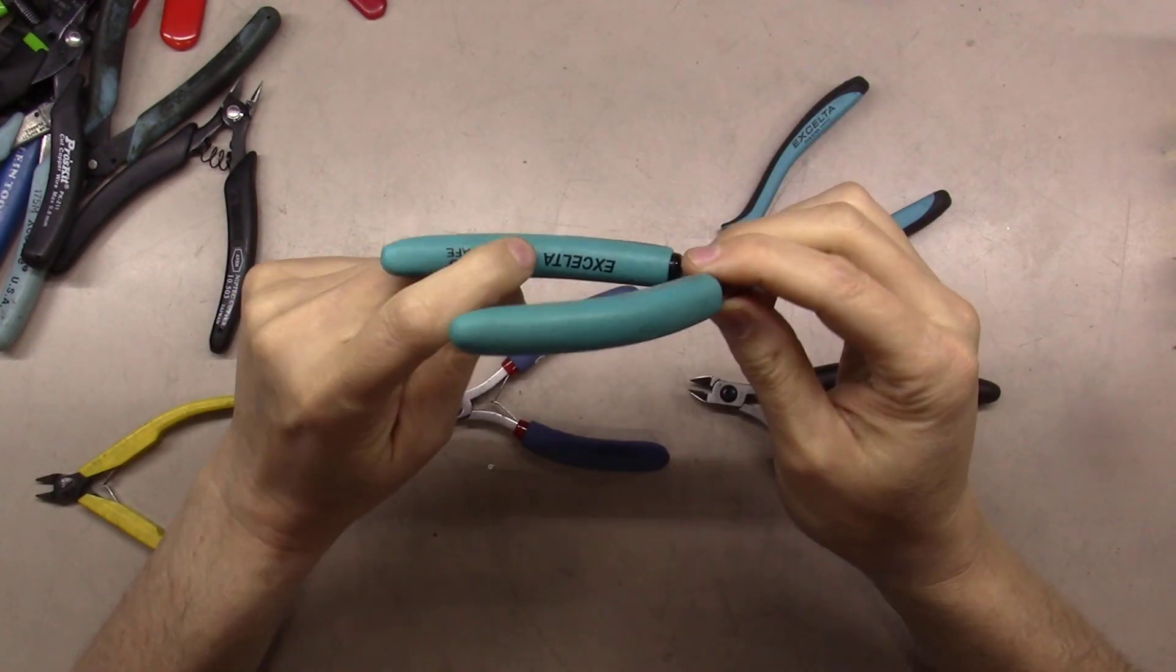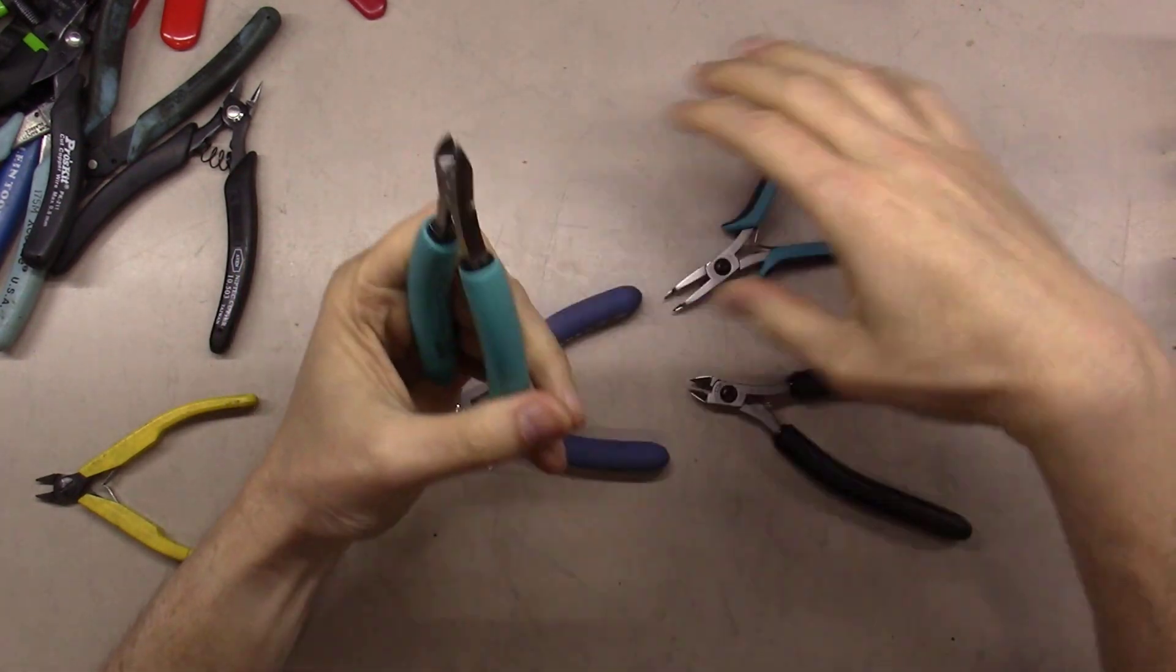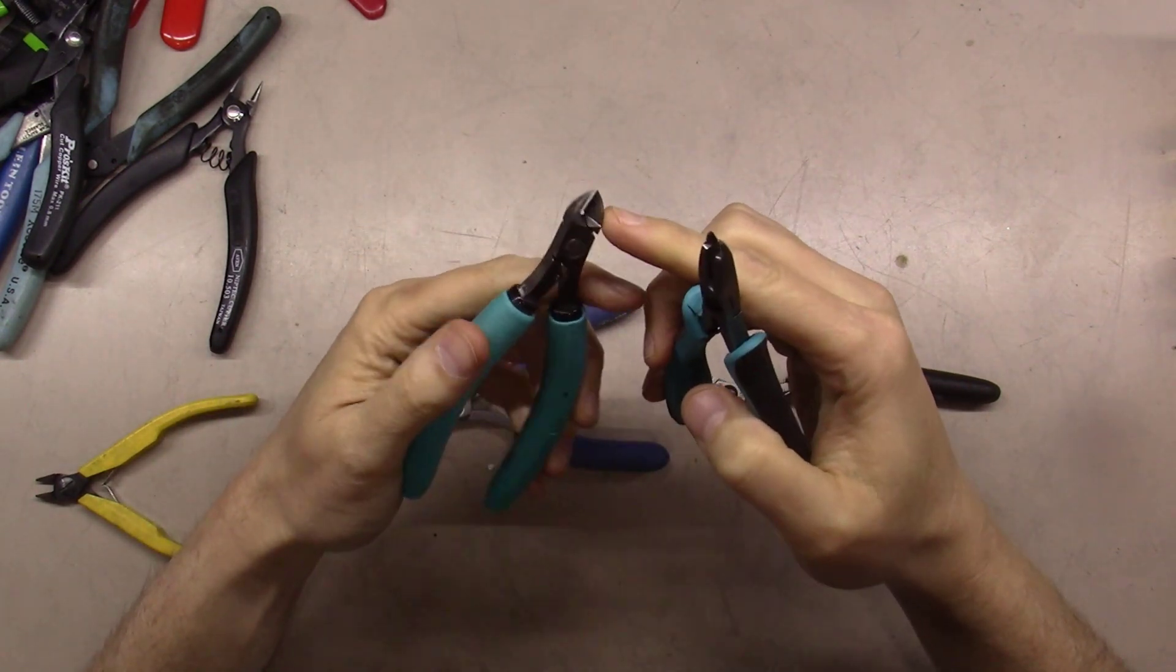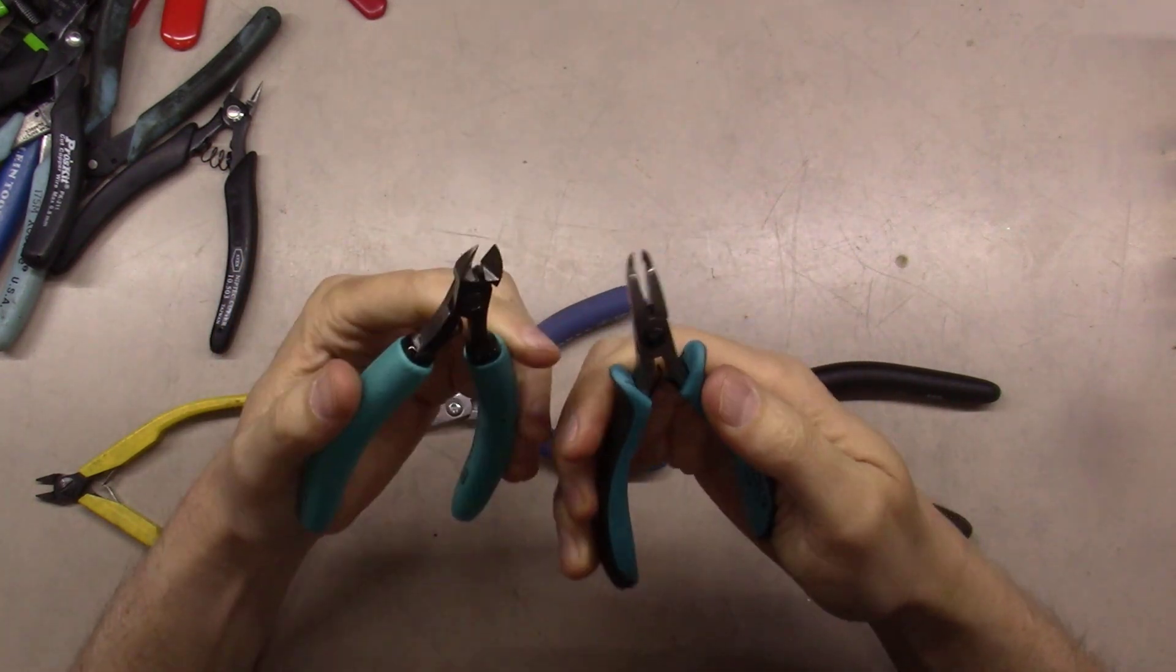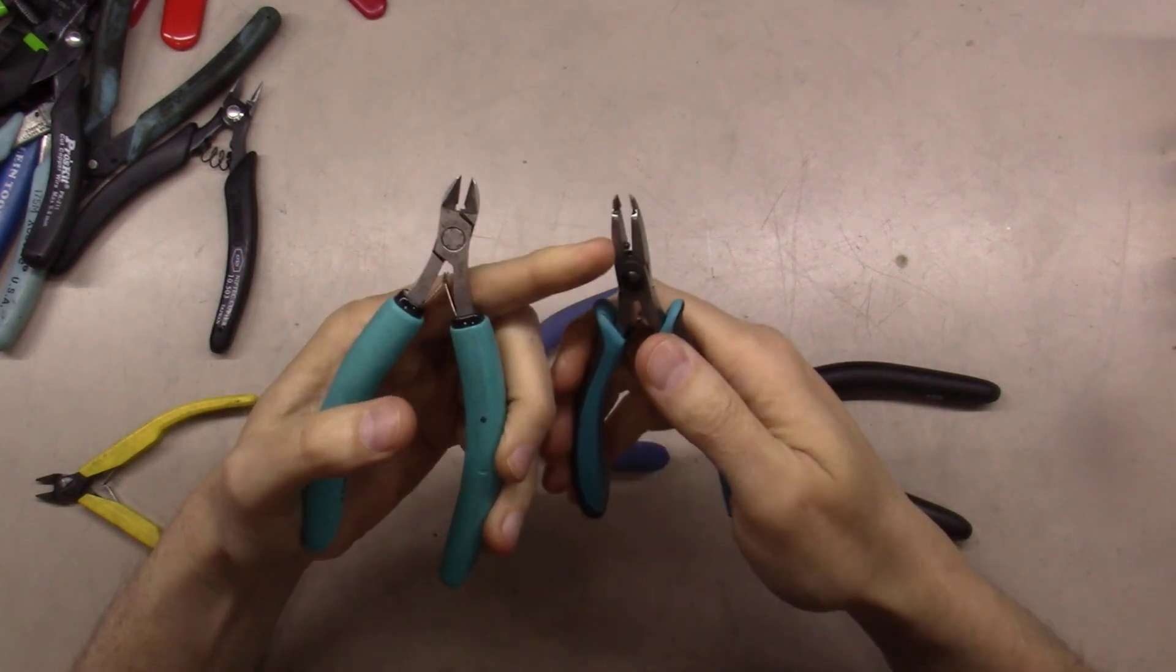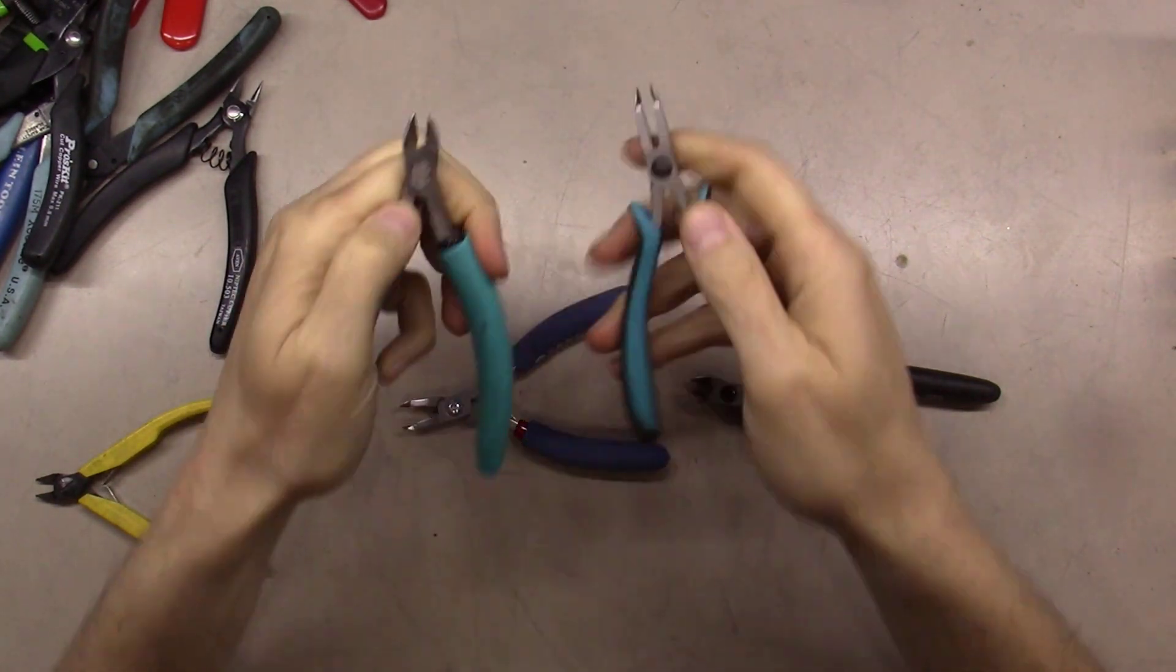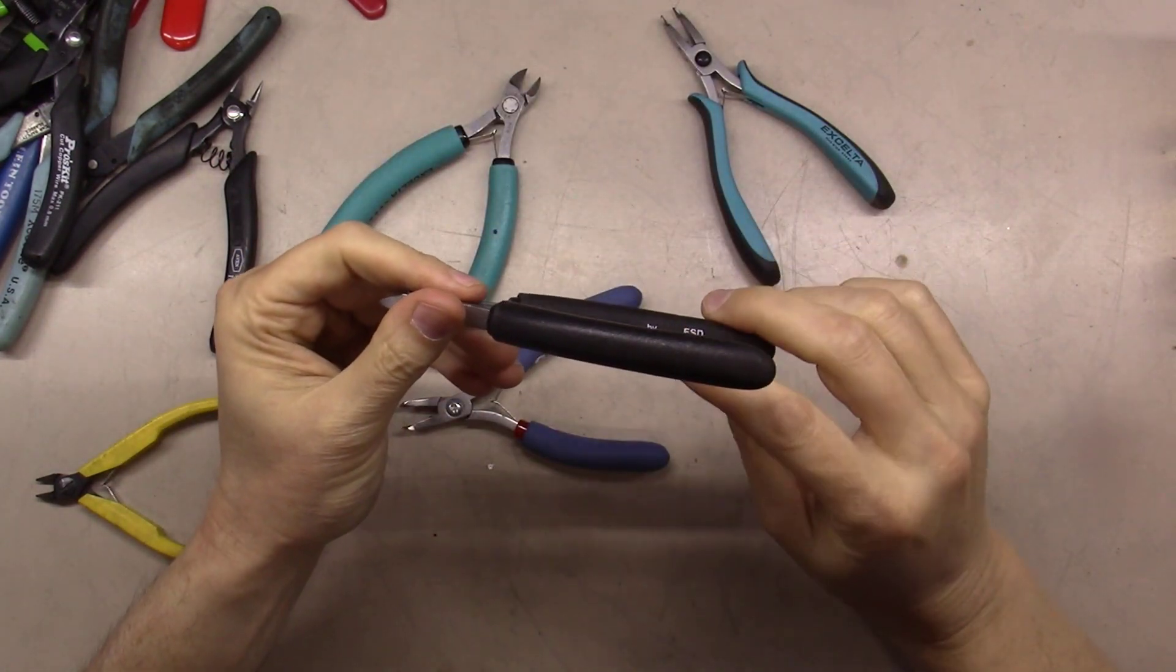These are some Excelta - excuse me - ESD safe. And I've picked these up at a ham fest near me. A guy has these. These are some long nose and these are just some rounded nose and they do a great job of cutting. And I actually think they're really good quality. They seem to be not stamped in any way - some type of forged or cast metal here. And they also have screws that can be tightened on them. They do a pretty good job.